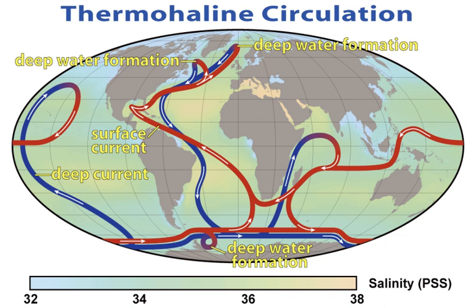The four-month 1910 North Atlantic expedition headed by John Murray and Johann Huert was the most ambitious research oceanographic and marine zoological project ever mounted until then, and led to the classic 1912 book The Depths of the Ocean. The first acoustic measurement of sea depth was made in 1914. Between 1925 and 1927 the Meteor expedition gathered 70,000 ocean depth measurements using an echo sounder, surveying the mid-Atlantic ridge. Sverdrup, Johnson and Fleming published The Oceans in 1942, which was a major landmark.